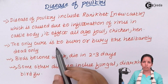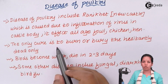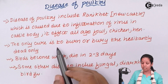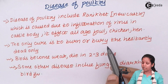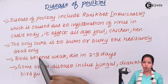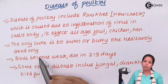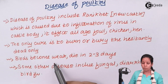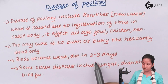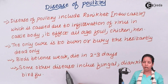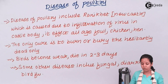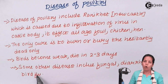There is no real prevention available for Newcastle disease. The only thing you can do to prevent other chickens from contracting the disease is to burn or bury the dead organisms or dead chickens. Birds affected by this disease become very weak very soon and die within a span of 2 to 3 days. Some other diseases include fungal diseases, diarrhea, bird flu, and salmonellosis.